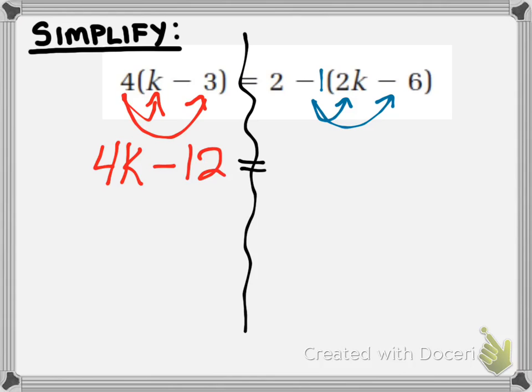What do you think, Adam? Negative 2k and positive 6. Nicely done. So essentially the signs flip. Is my second line complete? Am I solid? So that two is just coming along for the ride. And we are ready to go to our next step.